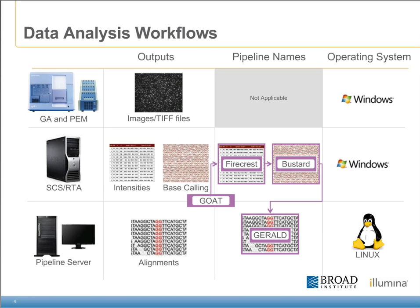To better understand where things occur, the following slide underlines some of the data analysis workflows in terms of the outputs, the pipeline names, or operating systems for which the GA, the SCS and RTA, or the pipeline server operate. In the case of the genome analyzer, its output is raw images in the form of TIFF files and runs on a Windows operating system. The software packages of SCS and RTA output both intensities and base calls and also run on the Windows operating system.